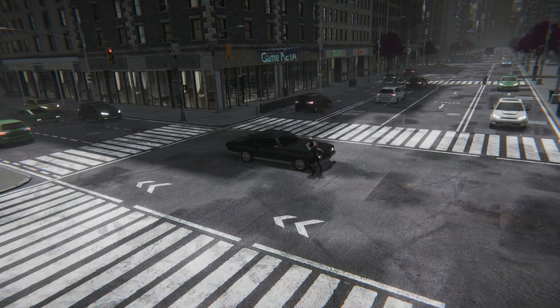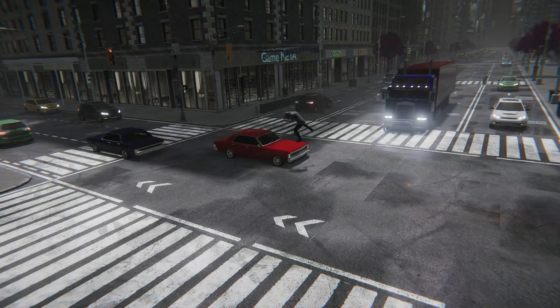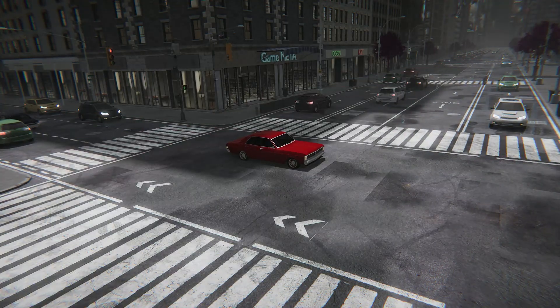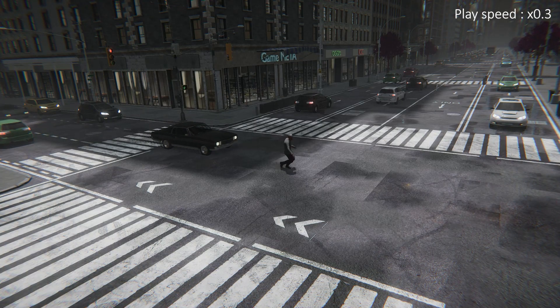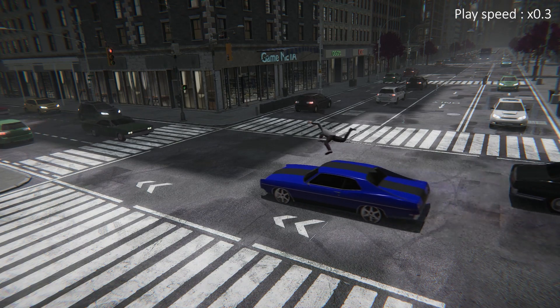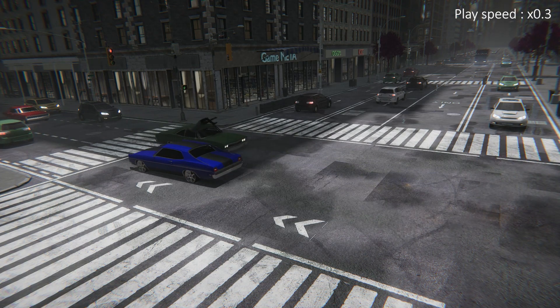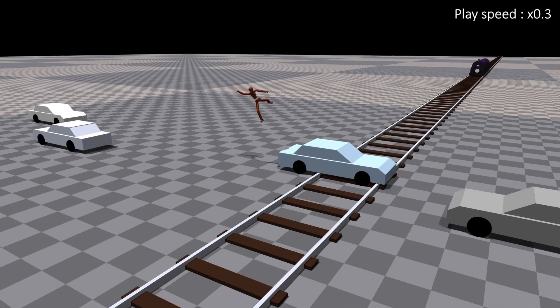This scene showcases our actor performing an extremely challenging stunt, being flung through the air as they collide with multiple vehicles. Attempting this in a real-world setting would be extremely dangerous. By using our system, we can create dynamic stunt actions quickly and easily, utilizing a virtual stunt actor that ensures no one gets hurt.